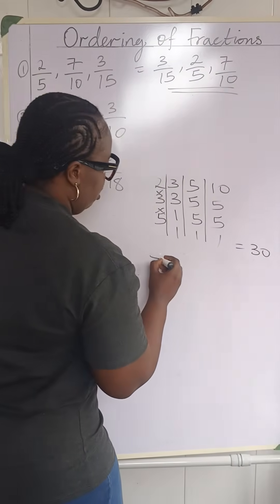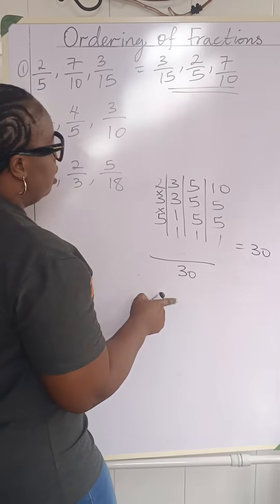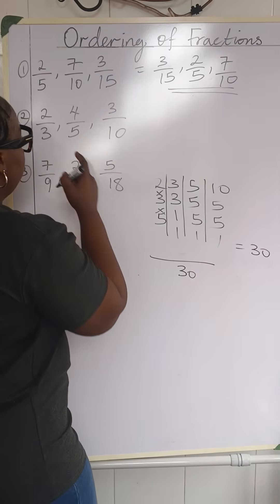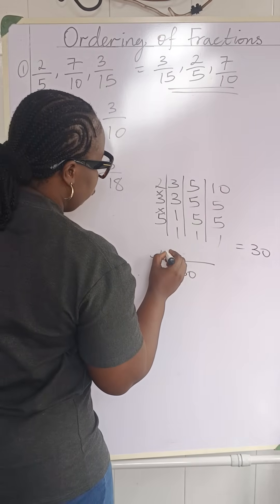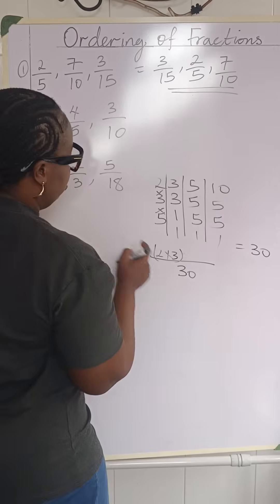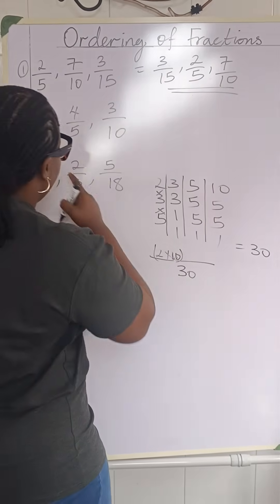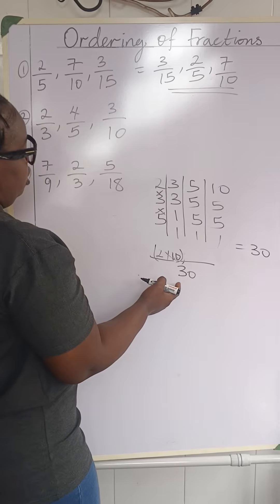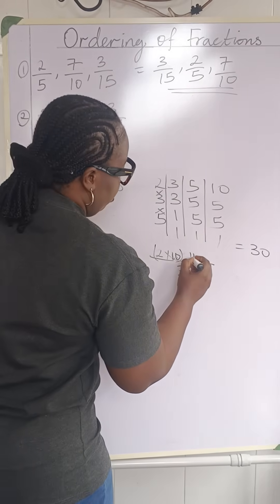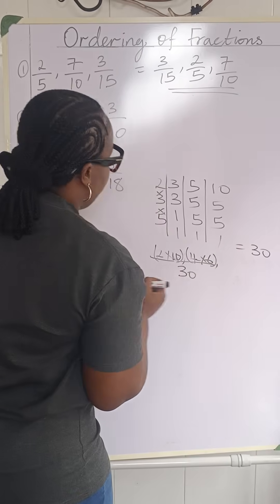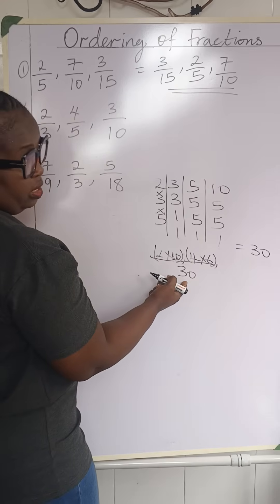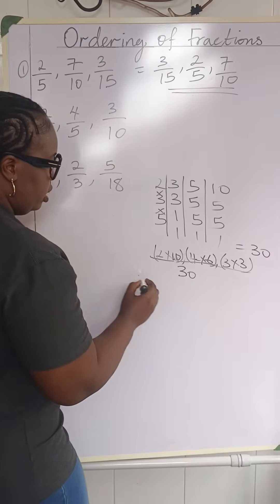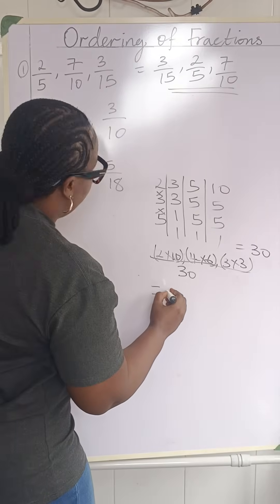Then using 5: 5 goes into each remaining value once — 1, 1, 1. So we multiply: 2 times 3 is 6, times 5 is 30. So the common denominator is again 30. Three going into 30 is 10, so we have 2 times 10. Five going into 30 is 6, so we have 4 times 6. Ten going into 30 is 3, so we have 3 times 3.